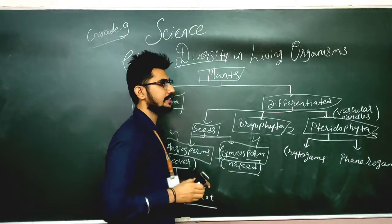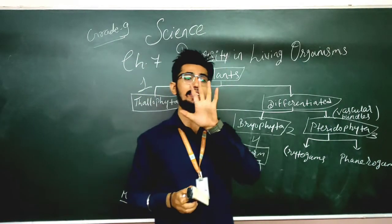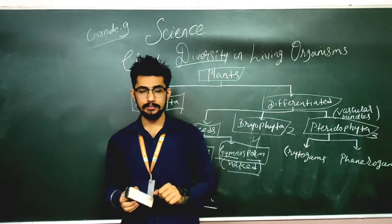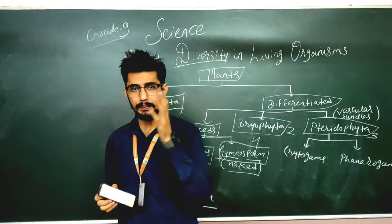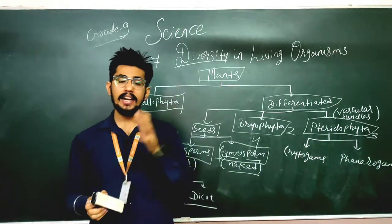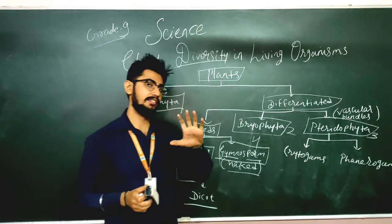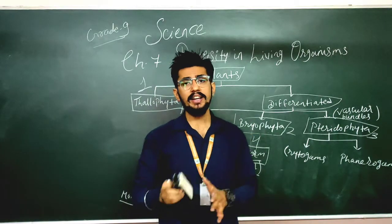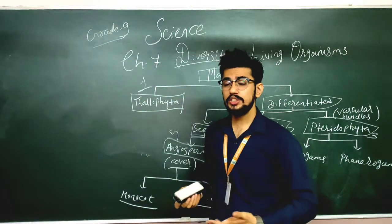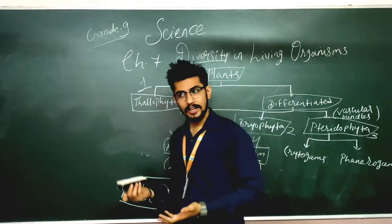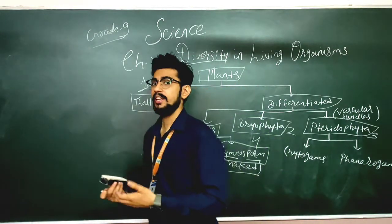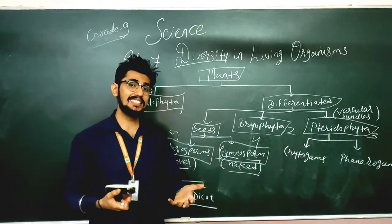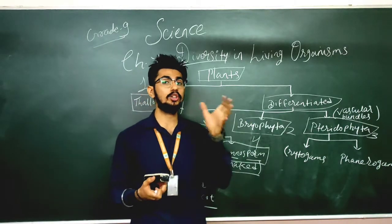Plants in Kingdom Plantae have five divisions. In those five divisions, we are going to see what kinds of plants are present and what special characteristics each particular group has.